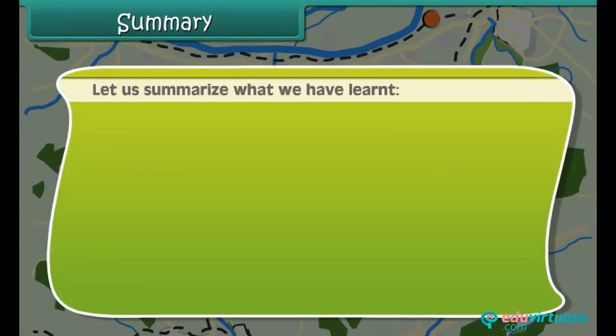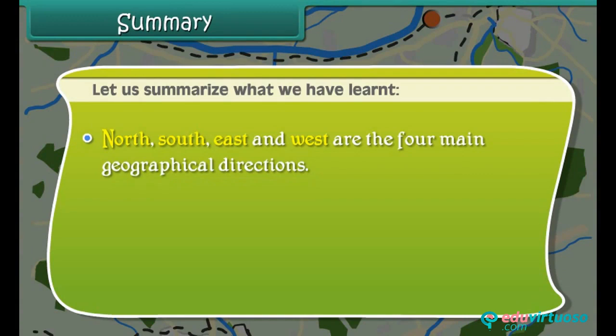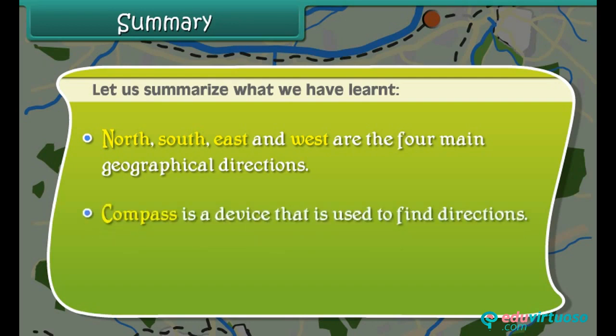Let us summarize what we have learned. North, South, East and West are the four main geographical directions. A compass is a device that is used to find directions. Maps use signs and symbols to indicate places.